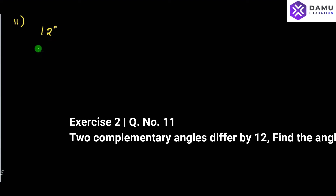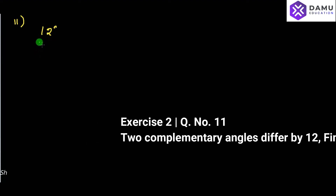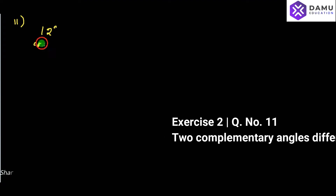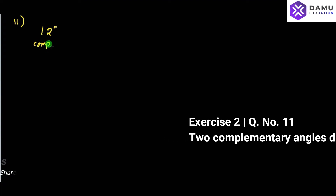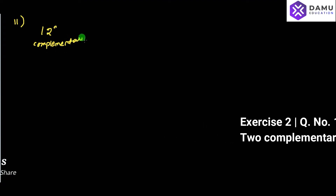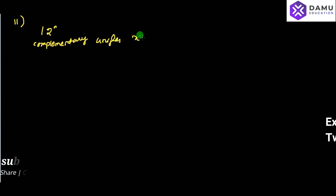What is meant by 'differ'? It means taking the subtraction between both angles. Complementary angles — the sum of two angles will be equal to 90 degrees. That is a complementary angle.